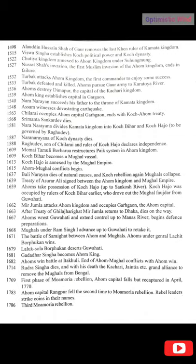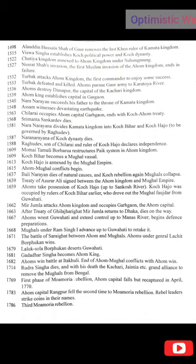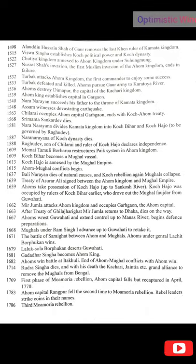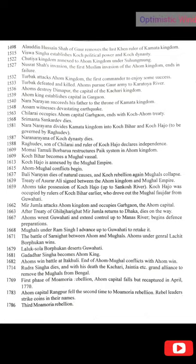In 1639, the Treaty of Asurar Ali is signed between the Ahom kingdom and the Mughal Empire. In 1659, the Ahom take possession of Koch Hajo up to the Sankosh River — Koch Hajo had been occupied by rulers of Koch Bihar, who drove out the Mughal force from Guwahati. In 1662, Mir Jumla attacks the Ahom kingdom and occupies Garhgaon, the Ahom capital. In 1663, after the Treaty of Ghilajharighat, Mir Jumla returns to Dhaka and dies on the way. In 1667, the Ahom retake Guwahati and extend control up to the Manas River, beginning defense preparations.